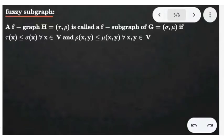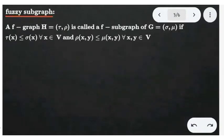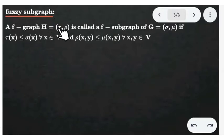Hello friends, today we are going to talk about the fuzzy subgraph. We already seen the fuzzy graph in the last video, so today we cover the fuzzy subgraph. The fuzzy subgraph is like a concept of the normal subgraph. The graph H is a subset of the graph G, then we say H is a subgraph of G. The graph H is called a fuzzy subgraph of G, where the vertex fuzzy set tau and the edge fuzzy set rho are subsets of the vertex fuzzy set sigma.